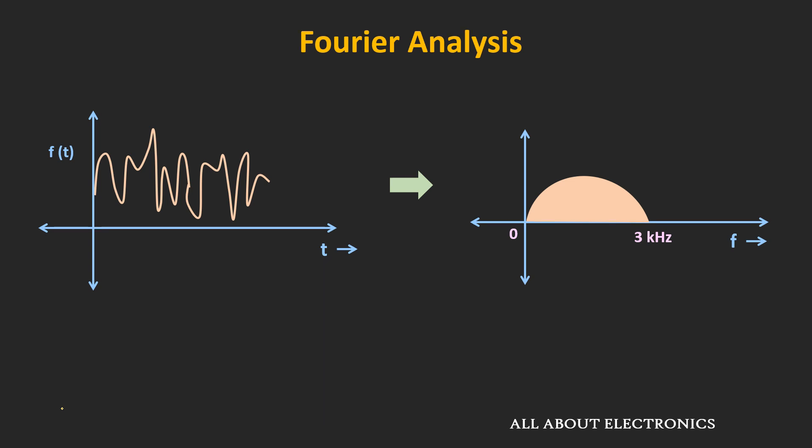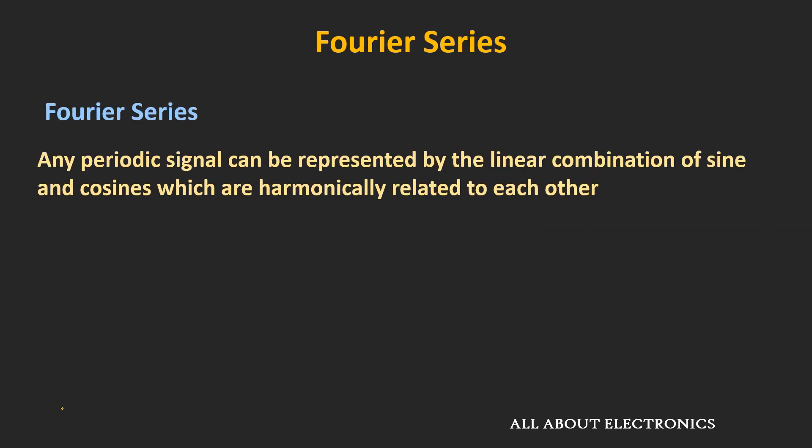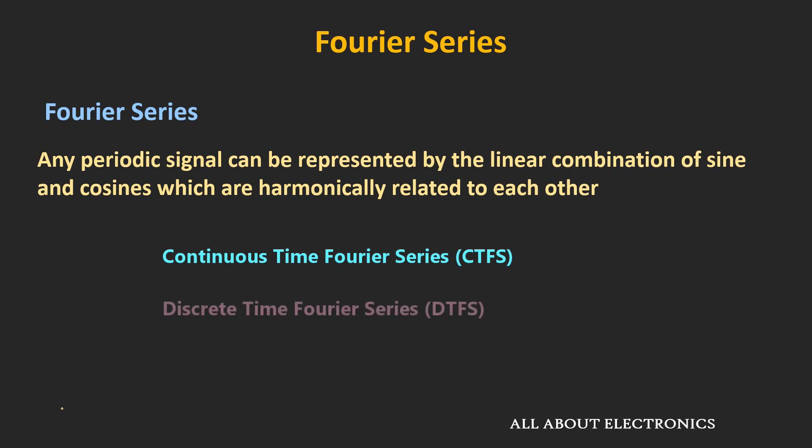Using Fourier analysis, we can find the frequency spectra of any signal. In this video, we will learn about the Fourier series. The Fourier series allows us to represent any periodic signal by the linear combination of sine and cosine waves which are harmonically related to each other. If the periodic signal is a continuous time signal, then it can be represented by the continuous time Fourier series. If it is a discrete time signal, then it can be represented by the discrete time Fourier series. But in this video, we will talk about the continuous time Fourier series.